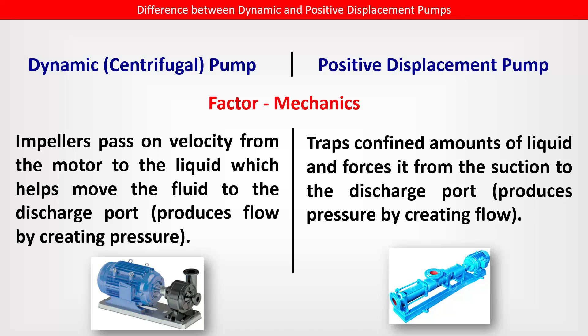Difference between centrifugal and positive displacement pump — factor: mechanics. Impellers pass on velocity from the motor to the liquid, which helps move the fluid to the discharge port, reducing flow by creating pressure. In the positive displacement pump, confined amounts of liquid are forced from the suction to the discharge port, reducing pressure by creating flow.